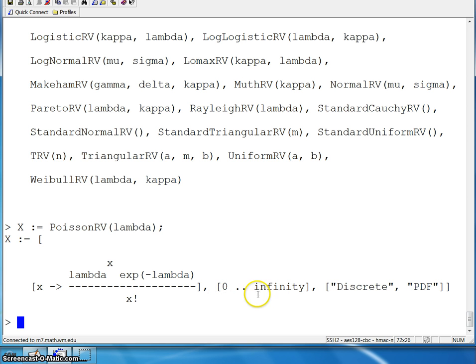I will set x equal to a Poisson random variable with parameter lambda. Notice it gives you the support which runs from zero to infinity. It is a discrete probability density function. Here is its probability mass function. In the case of a discrete random variable, even though we should be putting in pmf, pdf is put in in this case.